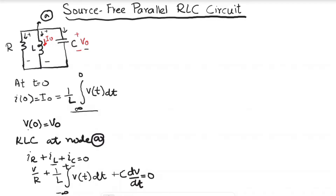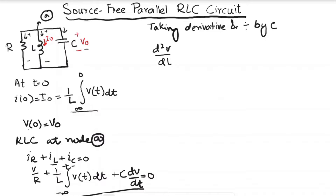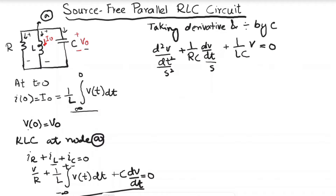Taking the derivative of the KCL equation and dividing by C gives: d²v/dt² + (1/RC) dv/dt + (1/LC) v = 0. Replacing the first derivative with s and the second derivative with s², the characteristic equation becomes: s² + (1/RC)s + (1/LC) = 0.